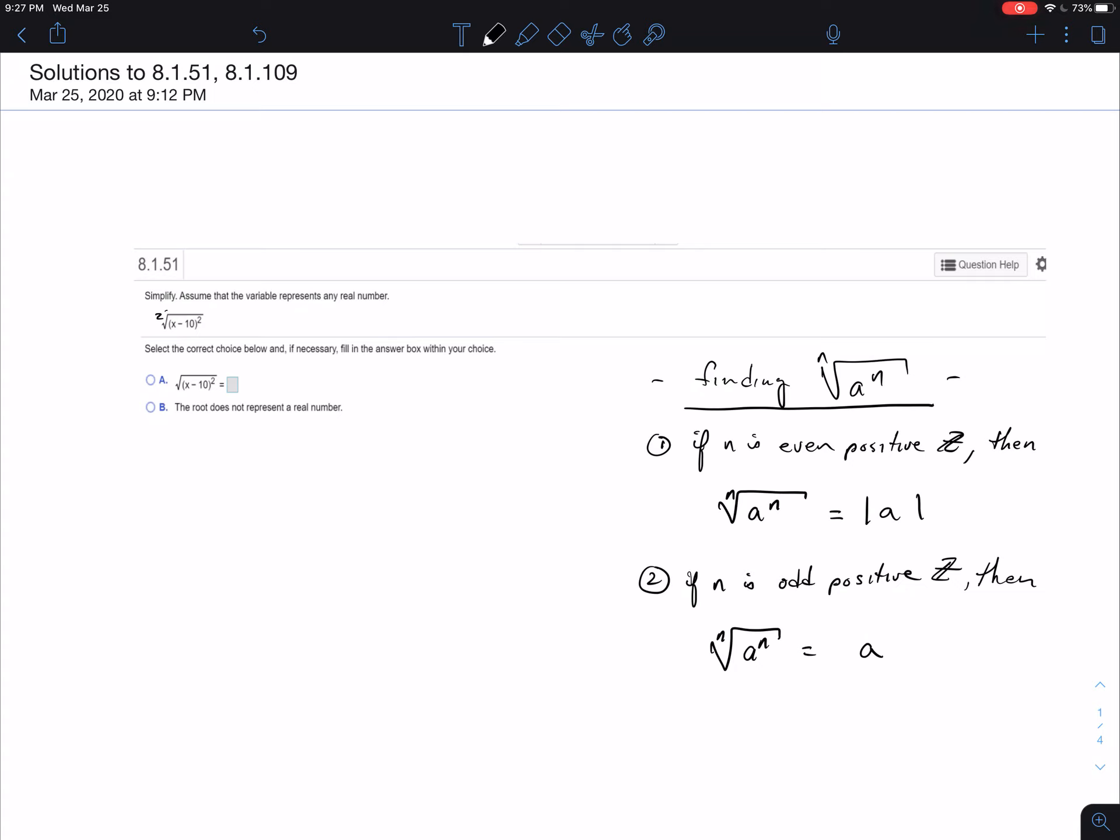that's n root symbol, the radical symbol. So n radical a to the n. Notice that the two n's match. So if this is the case, you have two options. If n is an even positive integer, remember that that stands for integer,